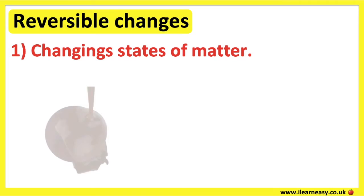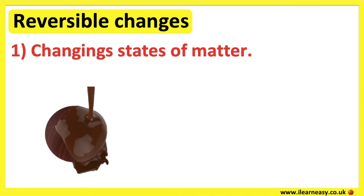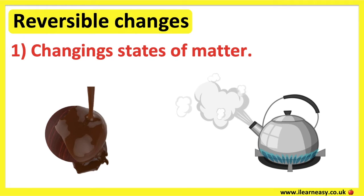For example, chocolate melts when it's warm, and it sets hard when it's cold. Boiling water evaporates as steam, and then it condenses back as water. So these are examples of reversible changes.